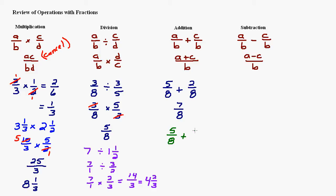Say we had 5 eighths plus 1 fourth. You have to make the denominators the same in order to add — there's no other way. I can change this 4 into an 8 by multiplying by 2. If I multiply the bottom by 2, I also have to multiply the top by 2, giving me 2 eighths. Two eighths is the same amount as 1 quarter — like cutting a candy bar into 8 pieces and eating 2 versus cutting into 4 and eating 1. Now with the common denominator of 8, I can add: 5 eighths plus 2 eighths equals 7 eighths.